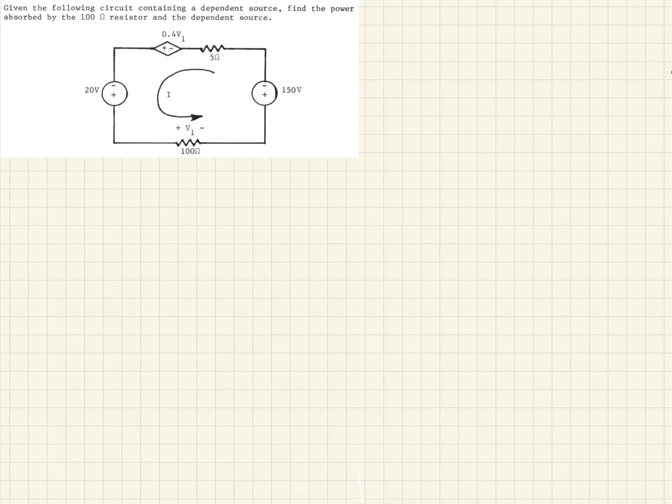So in this example, we're given a circuit that has a dependent source. That's the source right here, and you can see that it's dependent on the voltage across this resistor. What they're asking us to do is to find the power absorbed by the 100 ohm resistor.